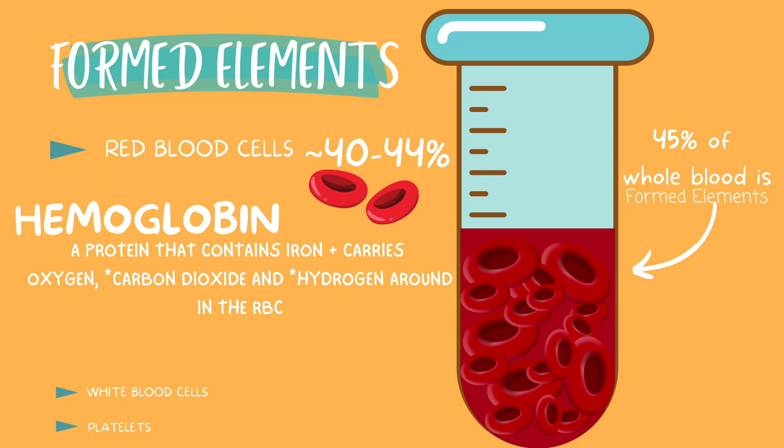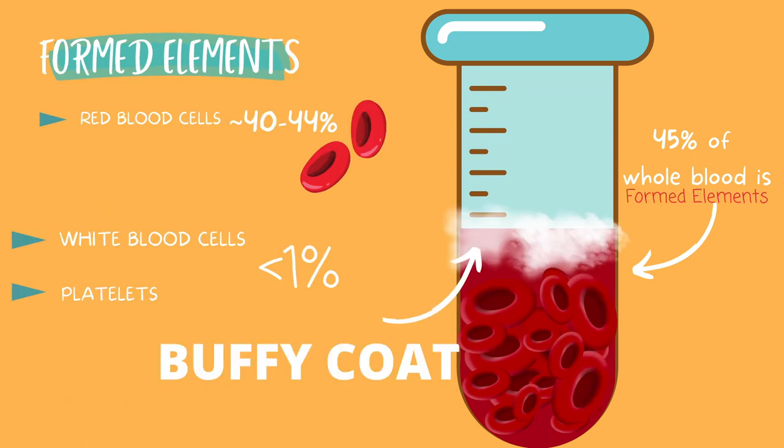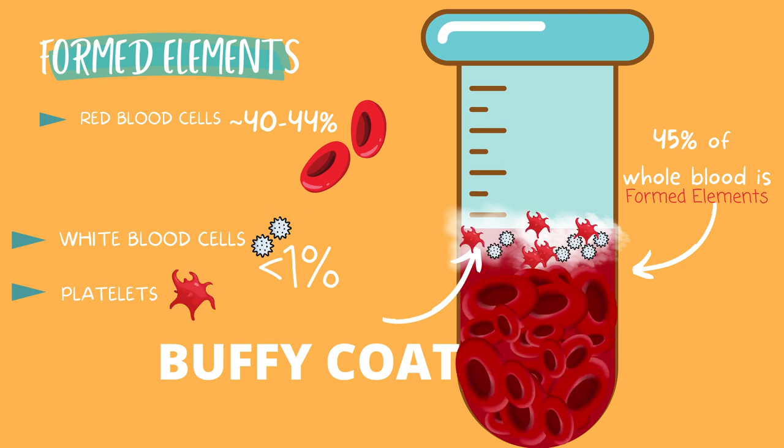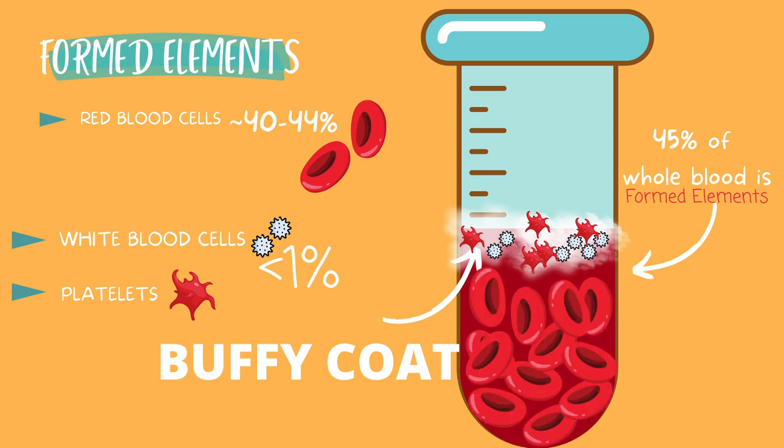Another layer that sits on top of the red blood cells is called the buffy coat. This is composed of white blood cells and platelets and makes up less than 1% of the formed elements. Platelets' main function is to assist in hemostasis by forming a platelet plug and beginning the clotting cascade. They also release serotonin at the beginning of hemostasis, which causes vasoconstriction. These platelets are also known as thrombocytes.